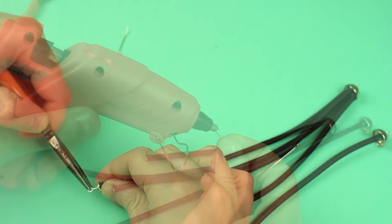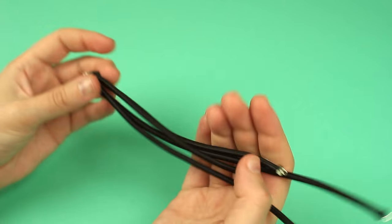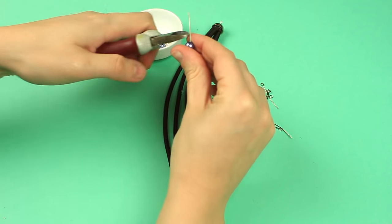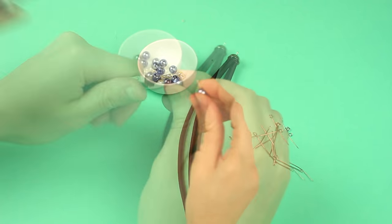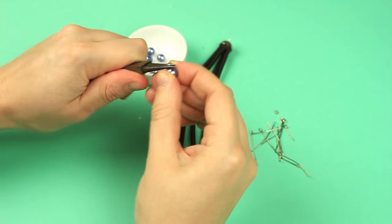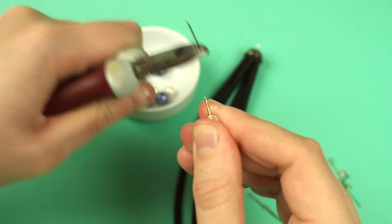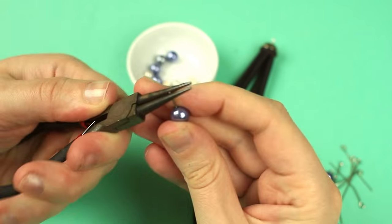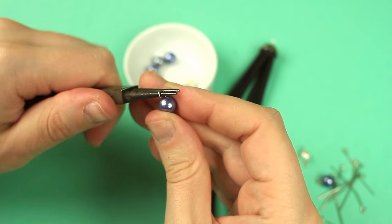Repeat for the other pieces. Thread a bead onto a pin. Snip off the end and make a curl. Thread a bead of another color and make a loop. Repeat for other details, alternating colors.